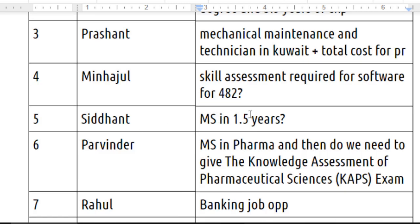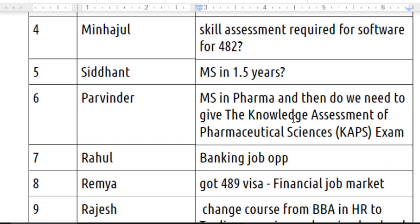The next question is from Sidant — he's asking if he can do an MS in just one and a half years. I would say go for a two-year course, because with a two-year course you will get more points as per the points table, and then you can easily get the PR visa after your education.